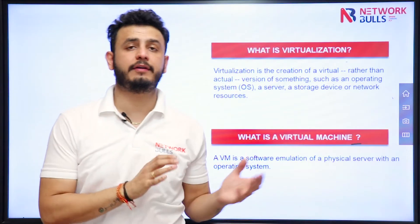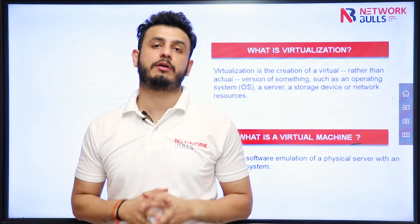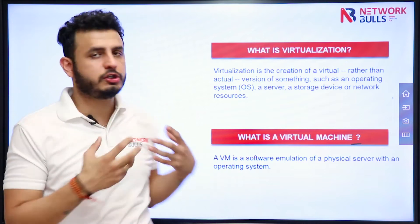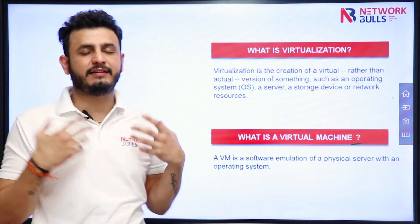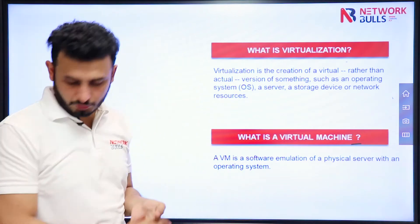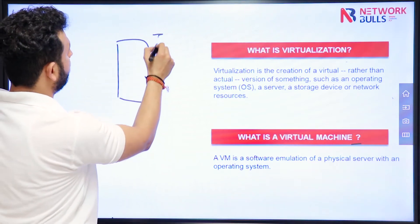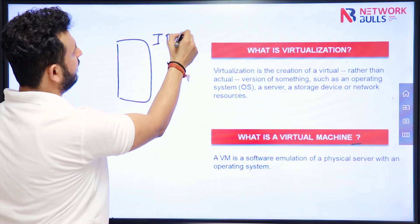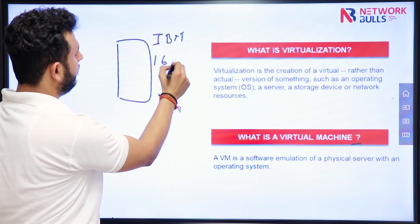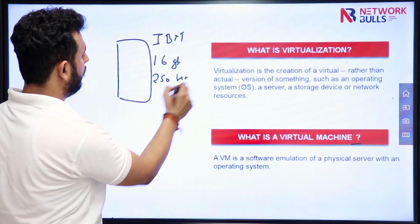In this video we will discuss what is virtualization and a few related terms. Virtualization is basically the creation of a virtual rather than actual version of something, such as an operating system. For example, let's say you purchase a server — an IBM server or a Cisco UCS — with 16 GB RAM and 250 GB of hard disk.